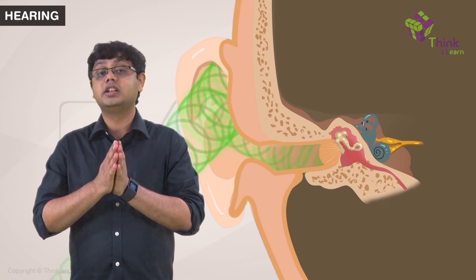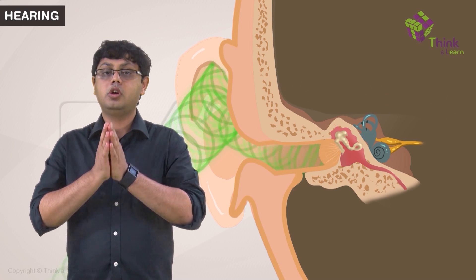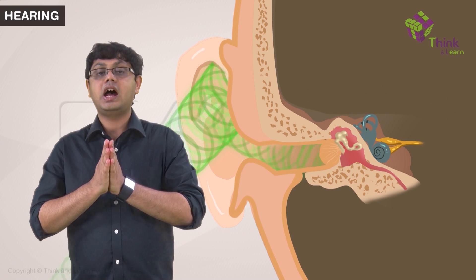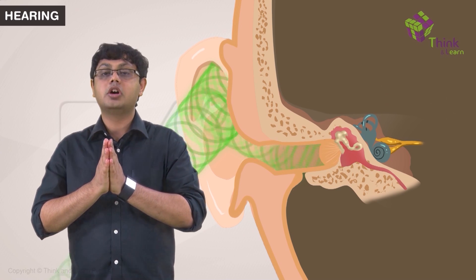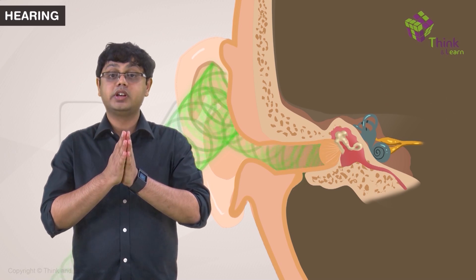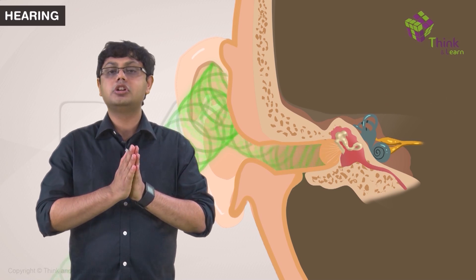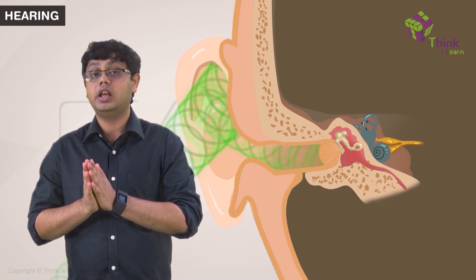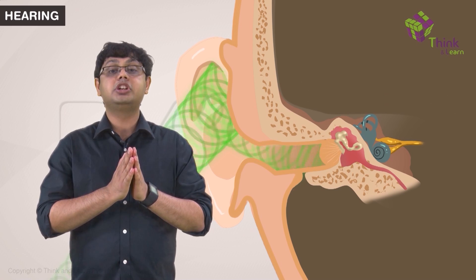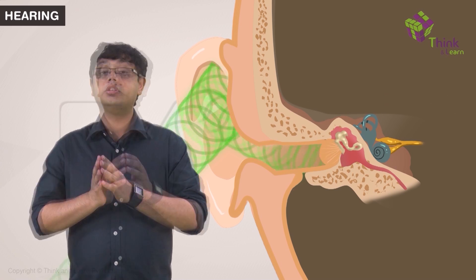The sound waves cause the tympanic membrane to vibrate, with the compressions pushing the membrane in and rarefactions pulling it out. As you can see here, sound energy is converted to mechanical energy, the form in which it will be transmitted through the rest of the ear.